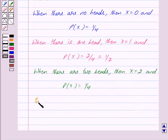Thus X equals zero, one, or two, because the maximum number of heads in two tosses of a coin is two.